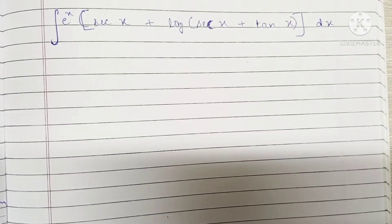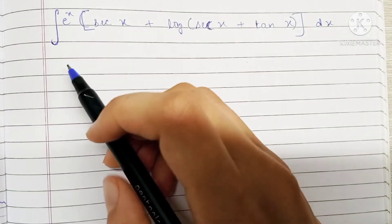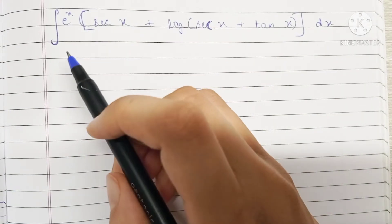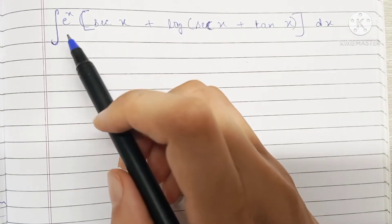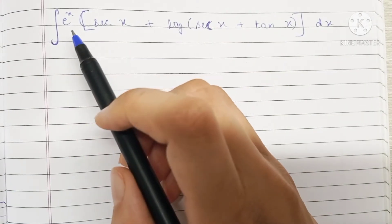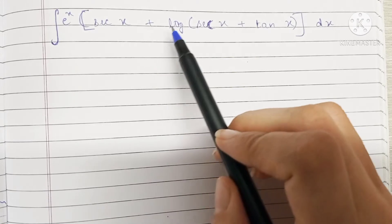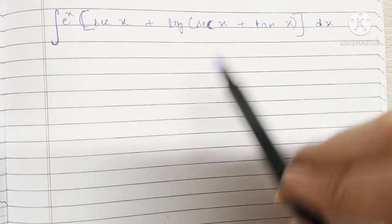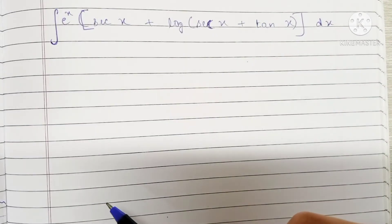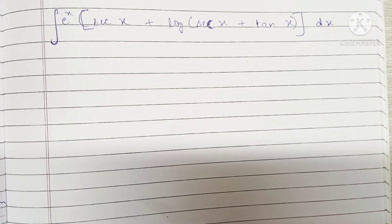Hey guys, welcome back to my channel! Today we'll be solving this question: the integral of e raised to x into bracket sec x plus log(sec x plus tan x), and we'll be solving it by parts.